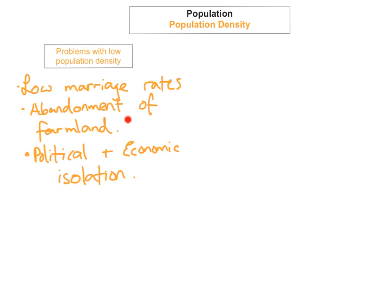A second major problem is the abandonment of farmland, mainly due to desertification — the turning of farmland into desert as land becomes too arid and dry. Rainfall shortages and decreased vegetation cover cause soils to turn to sand. Cattle die from lack of water, leaving people hungry, and people then migrate away. The third problem is political and economic isolation, just as seen in the west of Ireland.